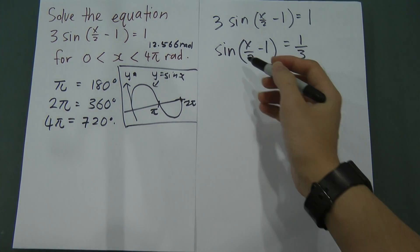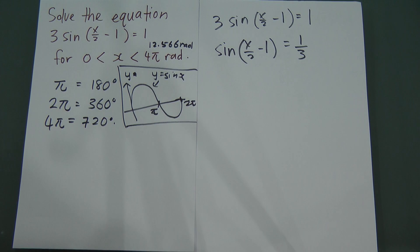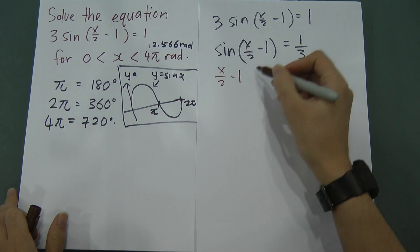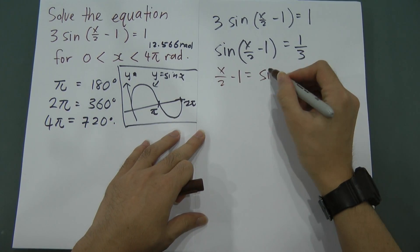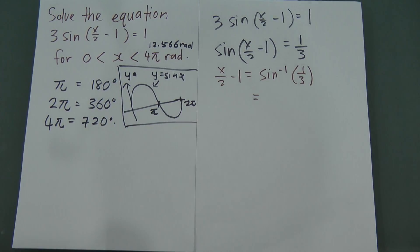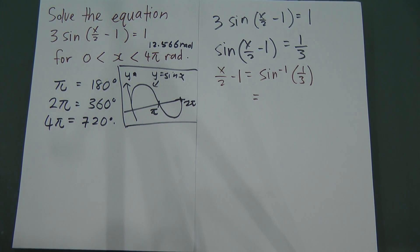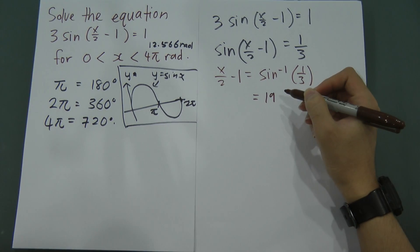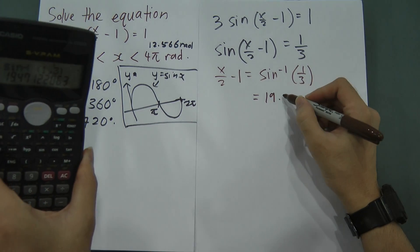After that, move the sine to the other side. When you do that, you get x/2 minus 1 equals shift-sine of 1/3. So press shift-sine, put the bracket, 1 over 3, close the bracket on your calculator. You'll get the degree value of 19.47 degrees.